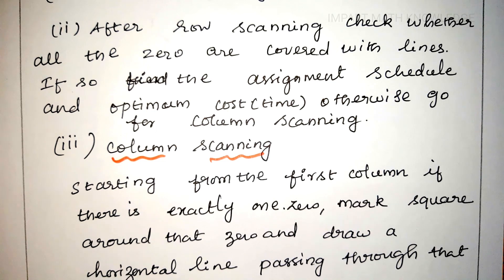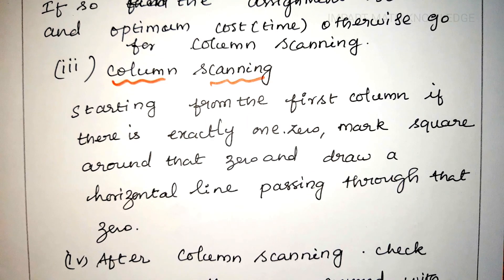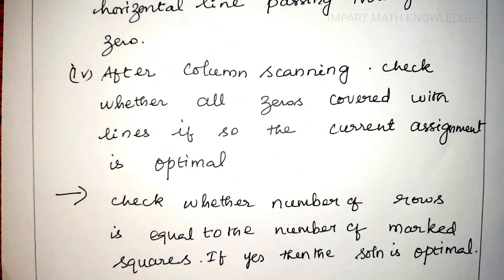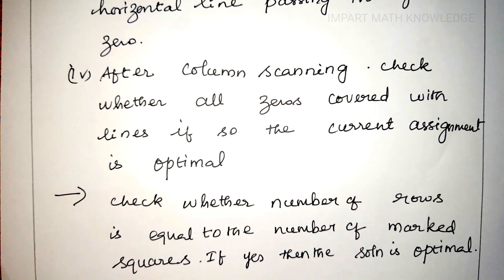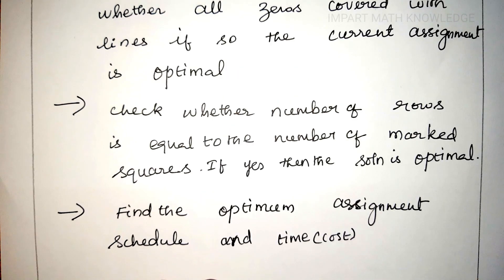Otherwise, go for column scanning. Starting from the first column, if there is exactly one zero, mark a square around that zero and draw a horizontal line passing through that zero. After column scanning, check whether all zeros are covered with lines. If so, check whether the number of rows is equal to the number of marked squares. If yes, then the solution is optimal, and we find the optimum assignment schedule and minimum processing time or minimum assignment cost.